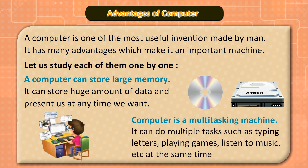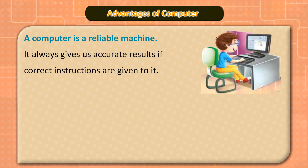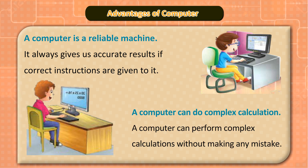A computer is a multitasking machine. It can do multiple tasks such as typing letters, playing games, listening to music, etc., at the same time. A computer is a reliable machine — it always gives accurate results if correct instructions are given to it. A computer can also perform complex calculations without making any mistake.